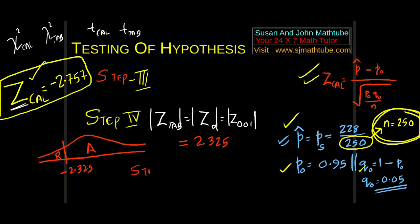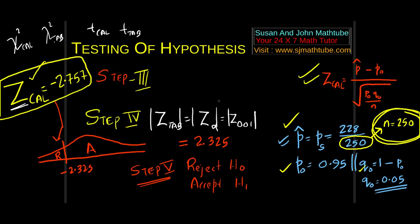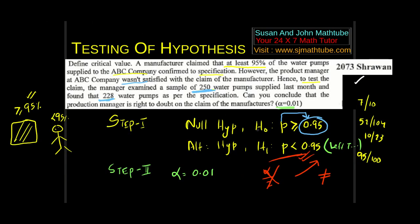Step number 5, the easiest step among all the 5 steps. Take the calculated value and look at the graph. My conclusion is very easy. Reject H0, and reject H0 means accept H1. Accept H1 means yeah, the manager seems to be correct. So we write, we are 99% confident that the manager has the right to suspect the manufacturer's claim.